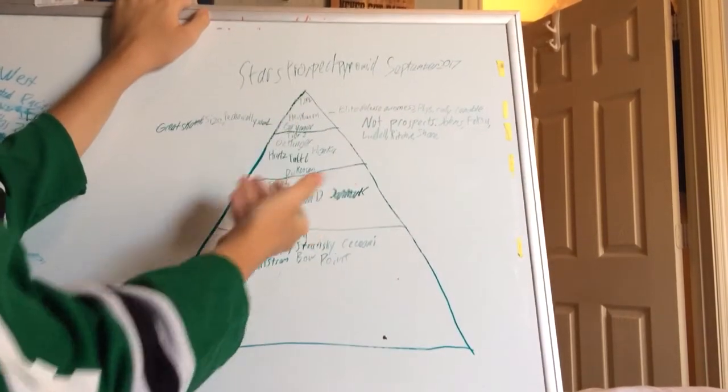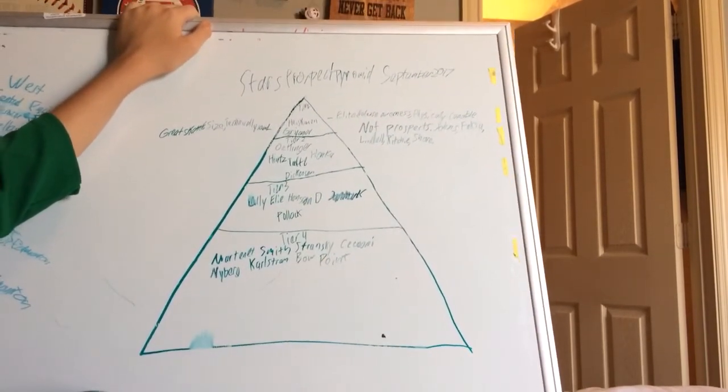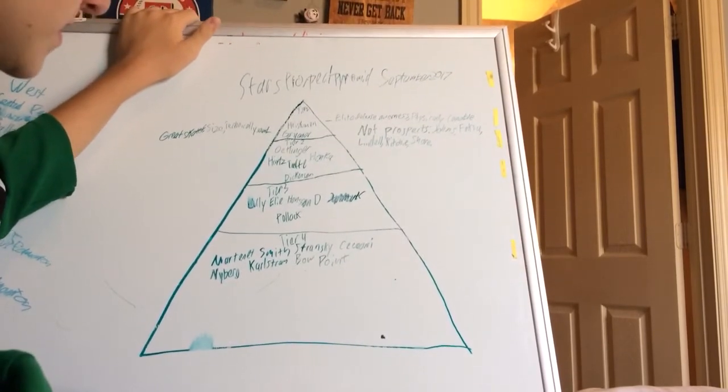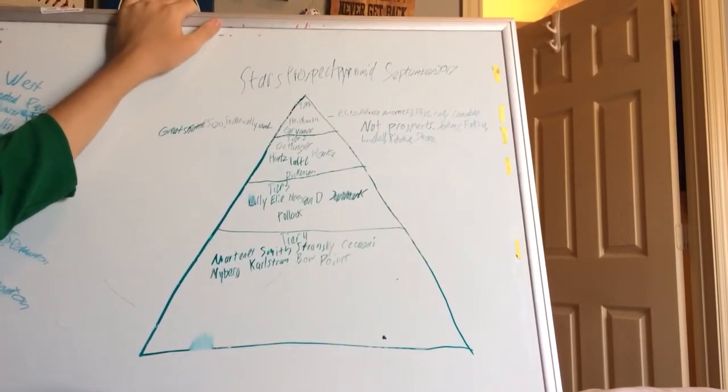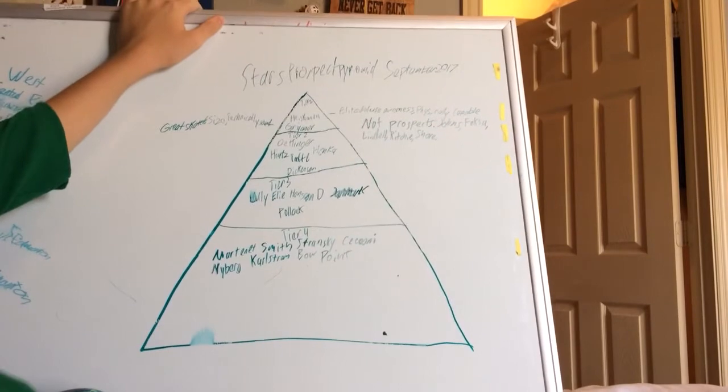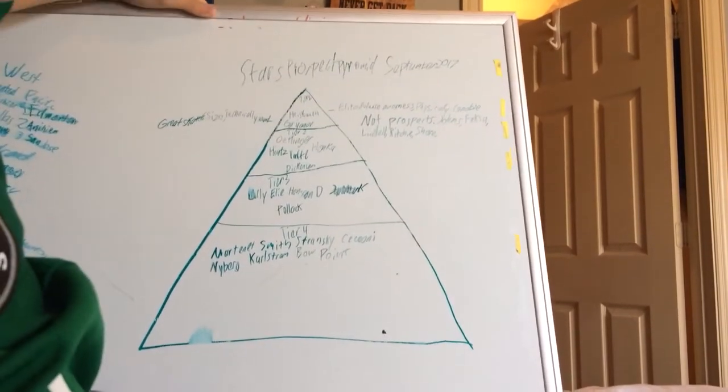But it's going to be the same general concept: tier 1, tier 2, tier 3, and then tier 4. There wasn't really a point of doing a tier 5, just because I think they just go to tier 4. But let's just get started.